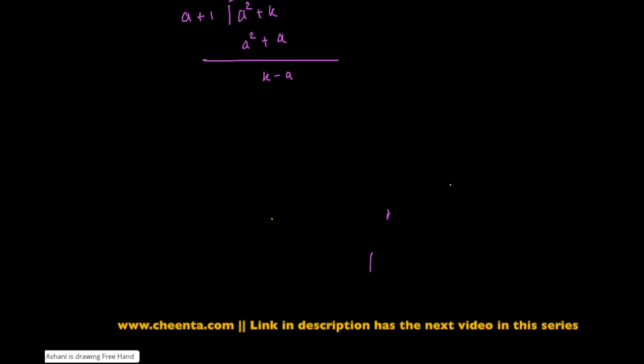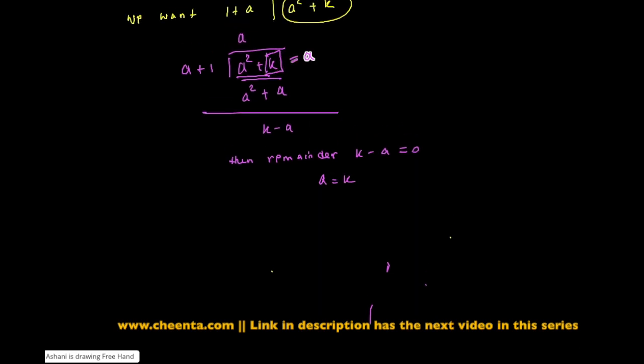This will be k minus a. So if a plus 1 exactly divides a square plus k, then the remainder k minus a is equal to 0, or a is equal to k. This quantity k must be equal to a.